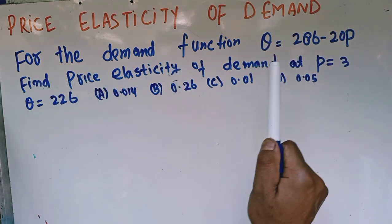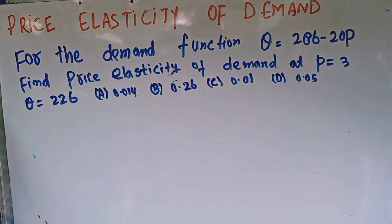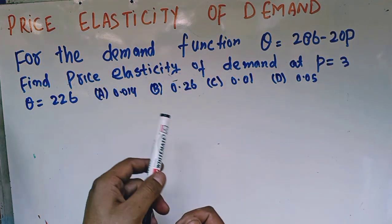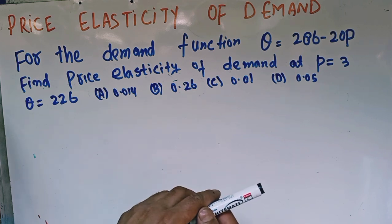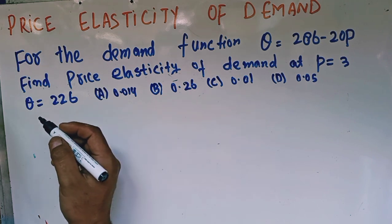We need to find the price elasticity of demand when price equals 3 and quantity demanded is 226. Options are given and we need to select the correct option.